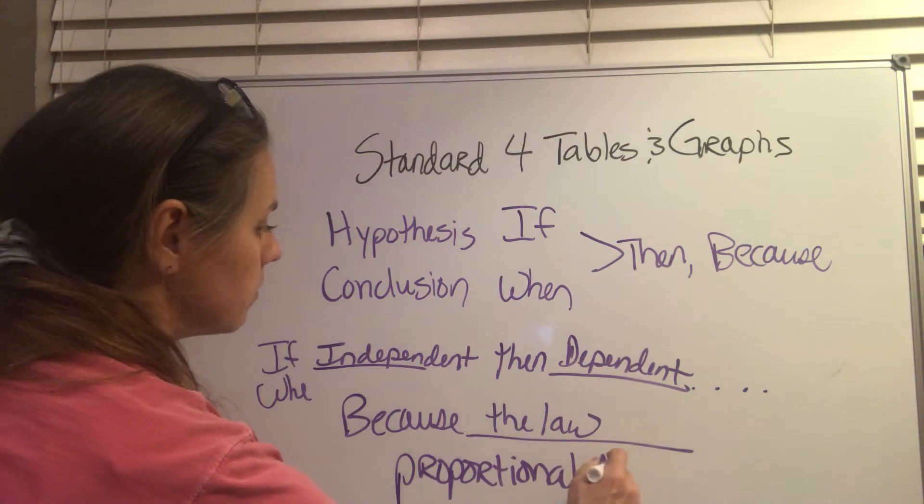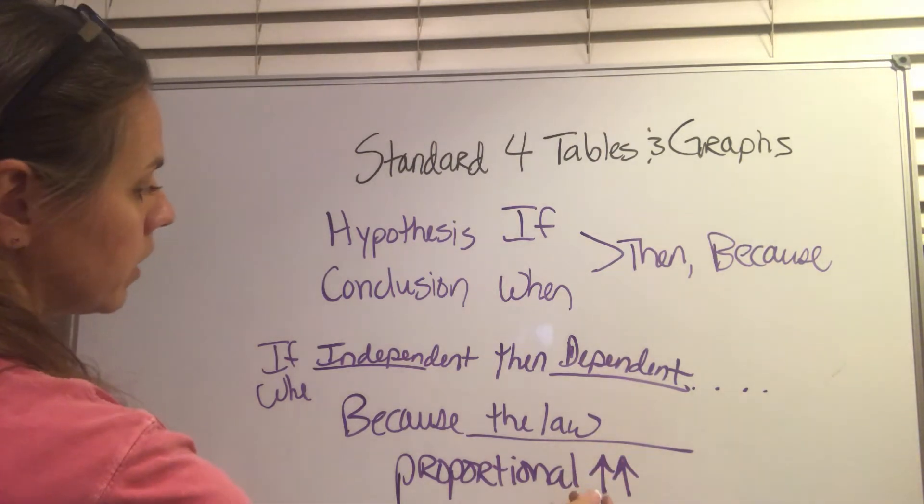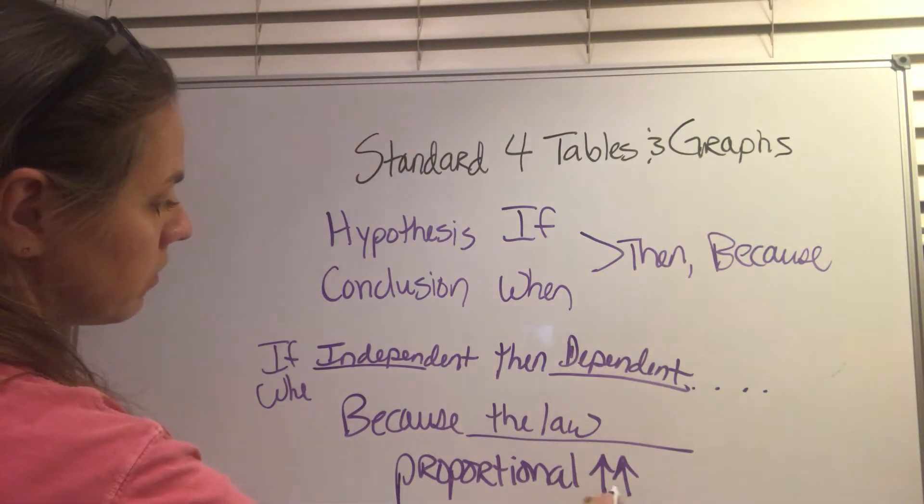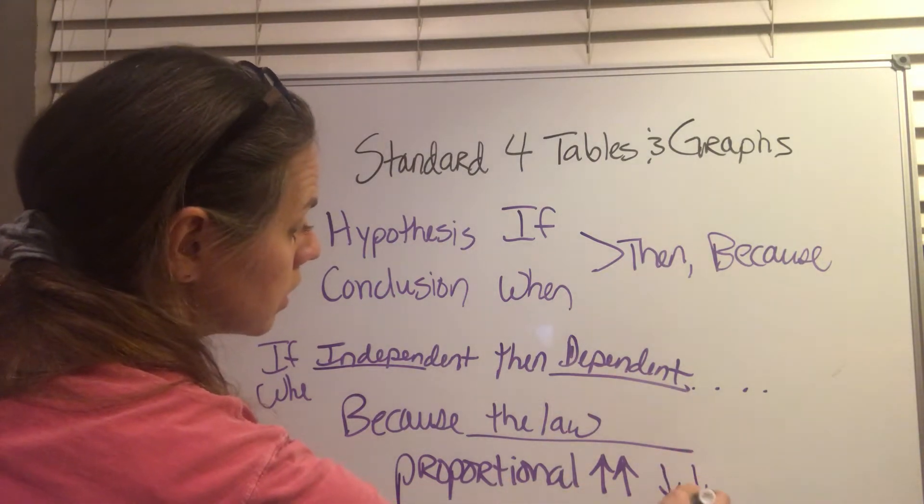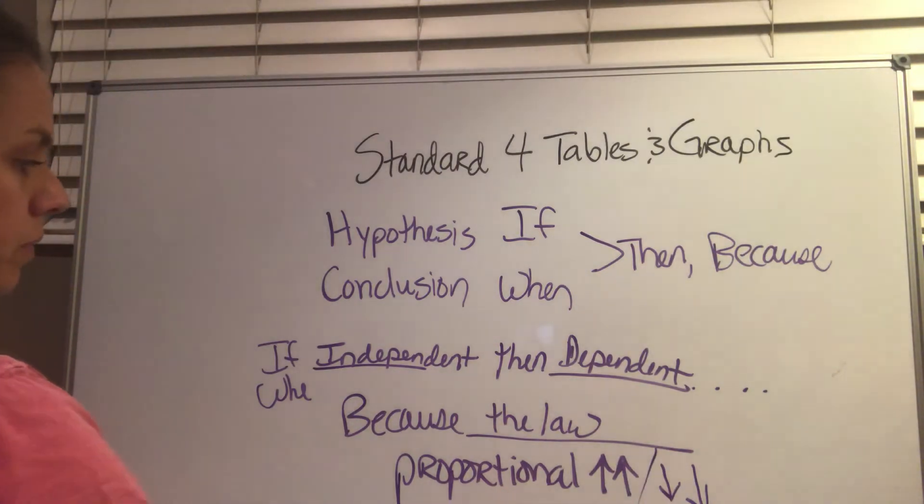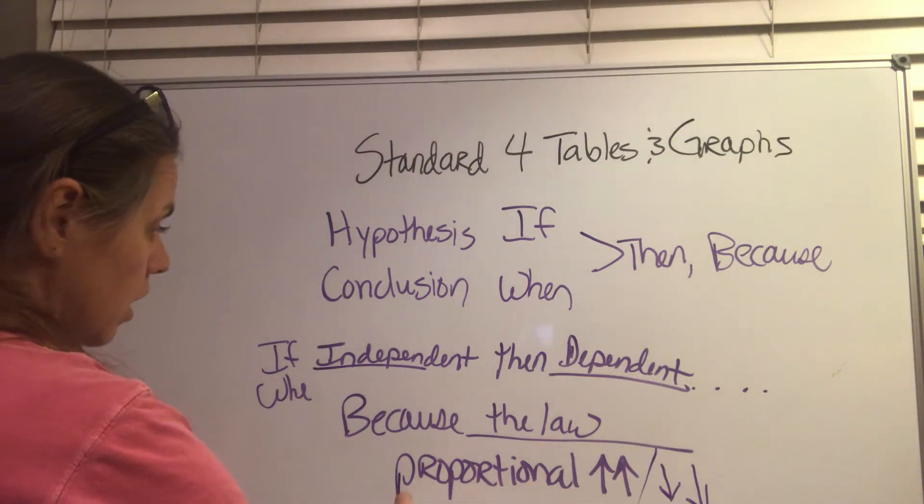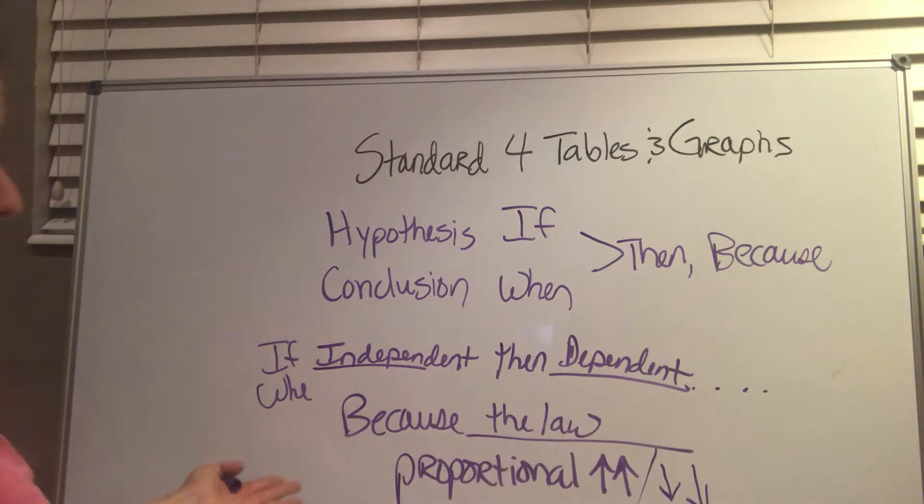Proportional is two thumbs up. When the independent variable is increased, so is the dependent variable. Or when the independent variable is decreased, so is the dependent variable. So that's proportional. That's the proportional law.